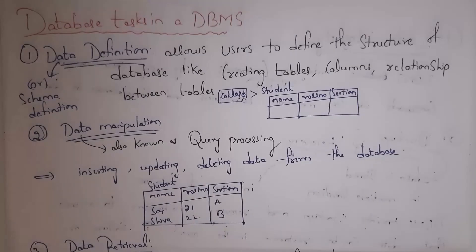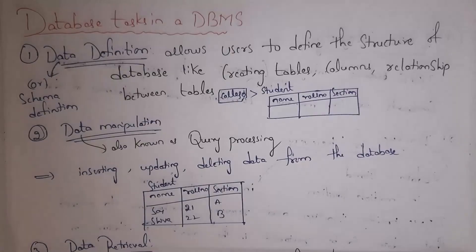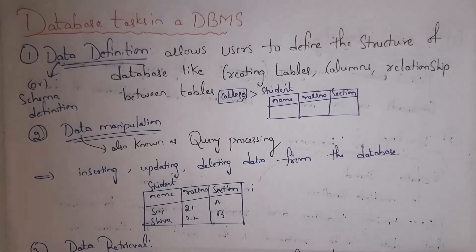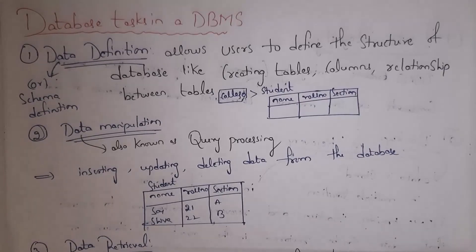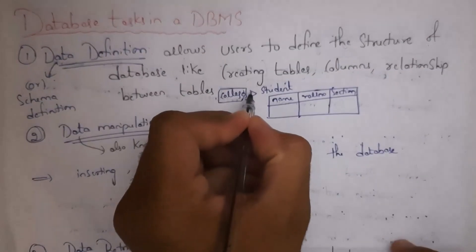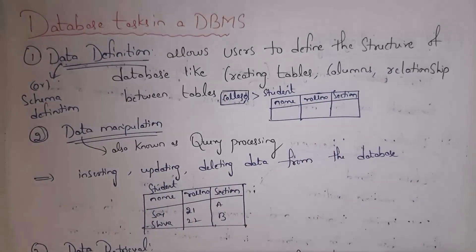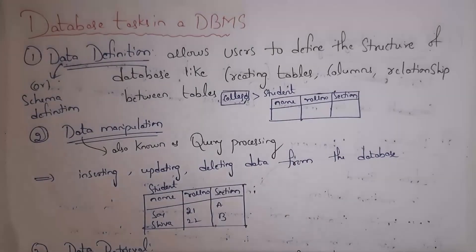Next I will explain database tasks in DBMS. Database tasks are operations in DBMS software. The first is data definition — which means just defining the structure of our database, like creating tables, creating columns, and establishing relationships between tables. For example, in my college database I created a student table with three columns: name, roll number, and section — without inserting data, just creating the structure. We also call data definition as schema definition; schema means structure.